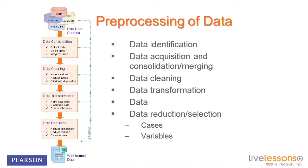Reduction means reducing dimensionality — you have a large number of variables and want to use only those most relevant to the prediction problem. There are methods to find the most representative subset of variables for a data mining study. As dimensions increase, model-building time increases exponentially, making dimensionality reduction a critical process — especially for datasets with very large numbers of variables, such as genomic data with tens or hundreds of thousands of variables that must be condensed to a manageable size.